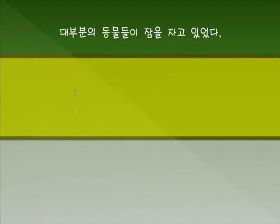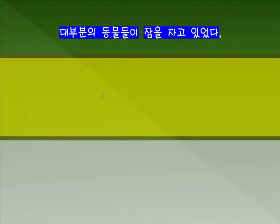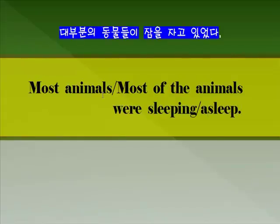두 번째 문장입니다: '대부분의 동물들이 잠을 자고 있었다.' 대부분의 동물들 — 'most animals' 혹은 'most of the animals' 이렇게 쓸 수 있습니다. 잠을 자고 있었다 — 시제가 과거이므로 'were sleeping'. 'Sleeping' 대신 'asleep'을 써도 무방합니다. 즉, 'were sleeping' 혹은 'were asleep'.